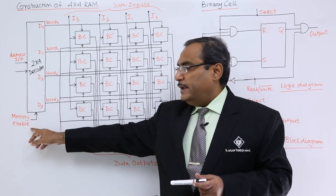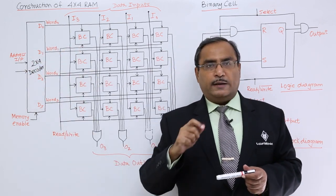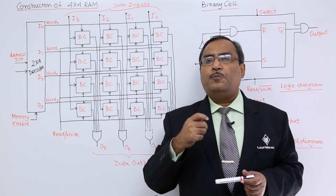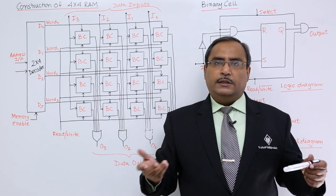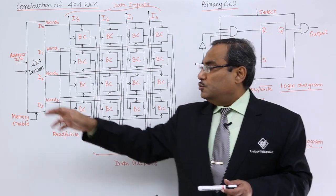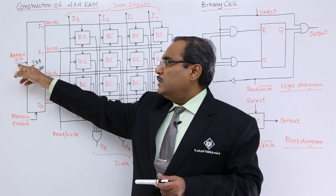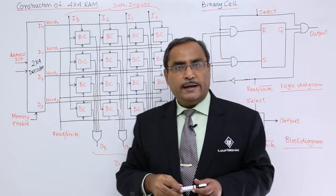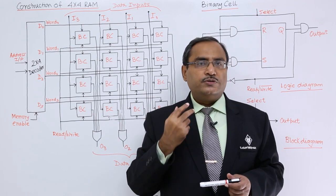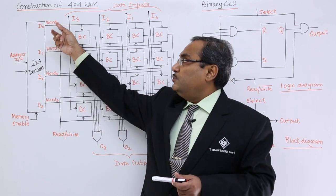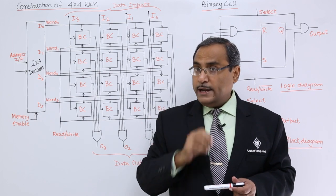This decoder circuit has one enable line. If this line is enabled, then depending upon the inputs, one of the output lines will be selected. But if the memory enable line is not enabled, then the decoder will not function. When we give 00 as input, word 0 line gets selected. When we give 11, word 3 line gets selected. So the 2 bits have 4 combinations — 00, 01, 10, and 11 — and accordingly word 0, word 1, word 2, or word 3 is selected one at a time.